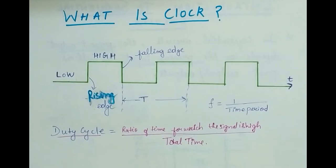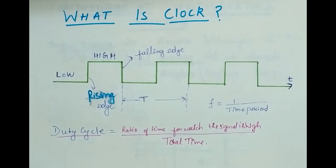So at what time what input should be given to the circuit is very much uncertain, and we need a signal which will control this particular operation and synchronize the inputs with the outputs. So we have a clock signal for that.